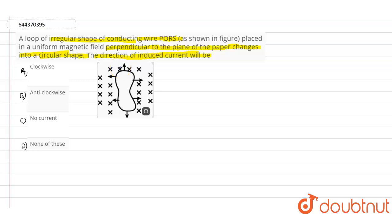So here we need to find out the direction of the induced current in this particular figure. If you see this, this is an irregular shape represented with PQ RS. This is placed in a uniform magnetic field.